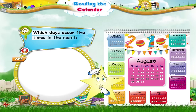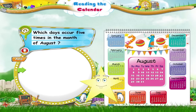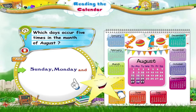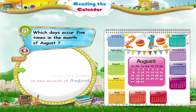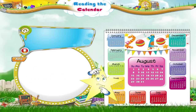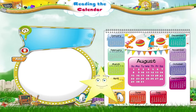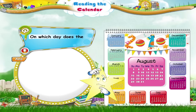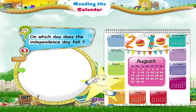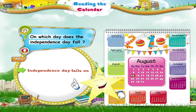And which days occur 5 times in the month of August? Sunday, Monday and Tuesday occur 5 times in the month of August. Starry, do you know on what dates do Sundays come? Sundays come on the 1st, 8th, 15th, 22nd and 29th of the month. And this year, Starry, on which day does Independence Day fall? Yes, Independence Day falls on a Sunday.